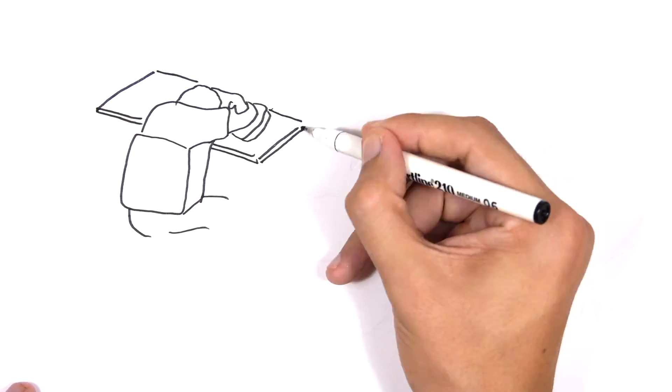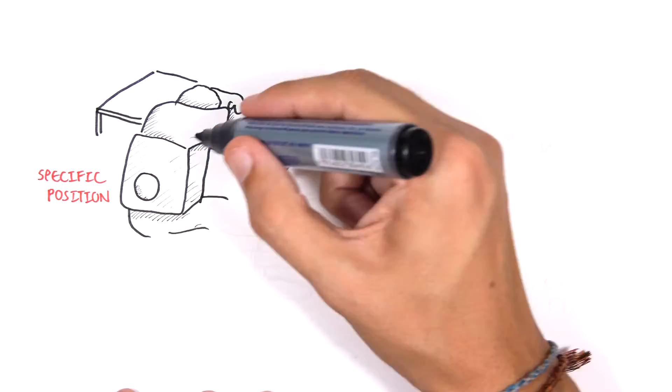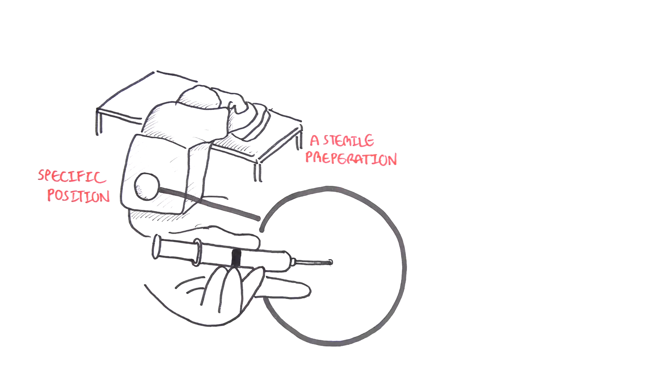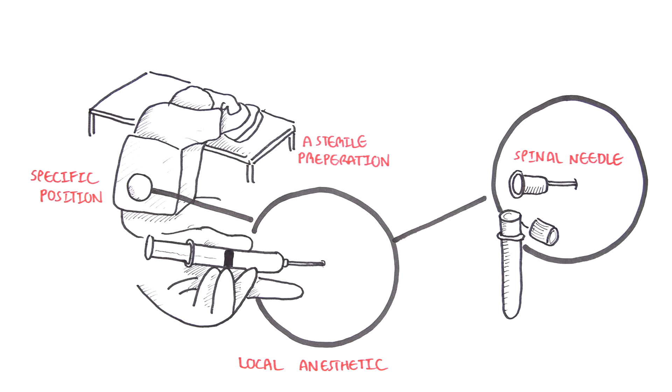In summary, the lumbar puncture procedure involves specific positioning for easy access to the spinal fluid, a sterile preparation, introduction of local anesthetic with a small needle, followed by use of a spinal needle to collect the spinal fluid.